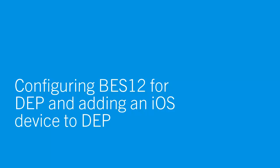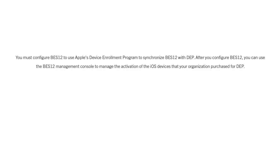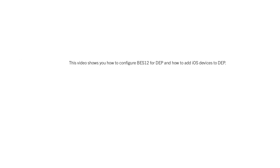Configuring BES12 for DEP and Adding an iOS Device to DEP. You configure BES12 to use Apple's Device Enrollment Program so that you can synchronize BES12 with DEP. After you configure BES12, you can use the BES12 Management Console to manage the activation of iOS devices that your organization purchased for DEP. This video shows you how to configure BES12 for DEP and how to add iOS devices to DEP.